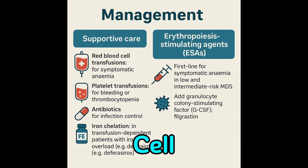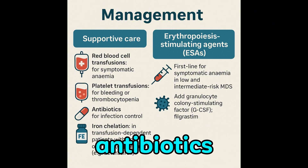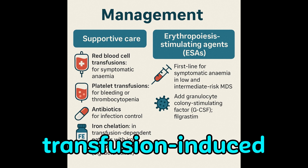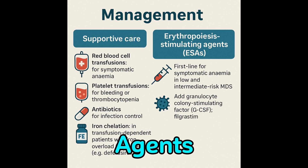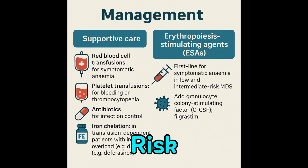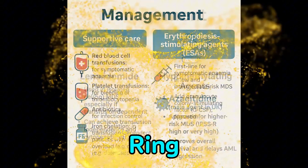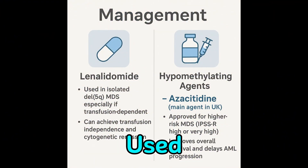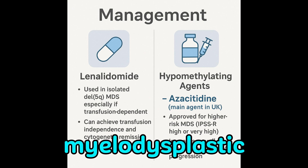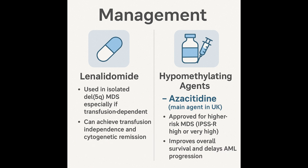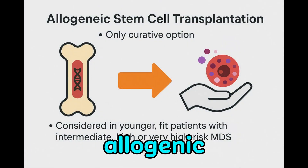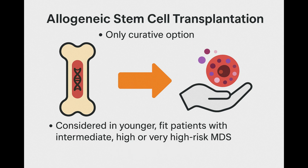Supportive care includes red cell and platelet transfusions, antibiotics for infections, and iron chelation for transfusion-induced overload. Erythropoiesis-stimulating agents are first line in low to intermediate risk MDS with symptomatic anemia. G-CSF may be added, especially if ring sideroblasts are present. Lenalidomide is used in isolated deletion 5Q myelodysplastic syndrome and can achieve transfusion independence. Azacitidine is the main hypomethylating agent in the UK, approved for higher risk MDS to prolong survival and delay AML progression. Allogeneic stem cell transplantation is the only curative option, considered in younger fit patients with intermediate to high risk MDS.